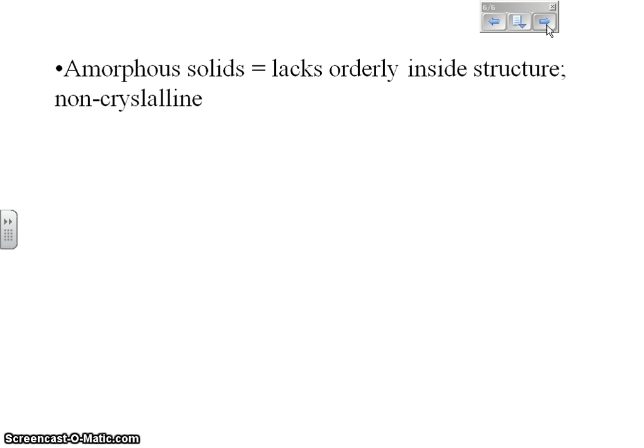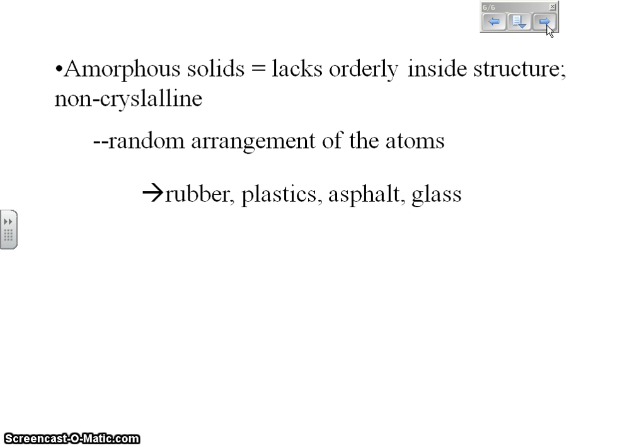There is also something called amorphous solids. Amorphous solids lack orderly inside structure. In other words, they are non-crystalline. They are not made of the crystalline structure. They have a more random arrangement of their atoms rather than the orderly arrangement of the atoms as a crystal substance does. Rubber is an amorphous solid. Some plastics are amorphous solid. Asphalt is an amorphous solid, as is glass.